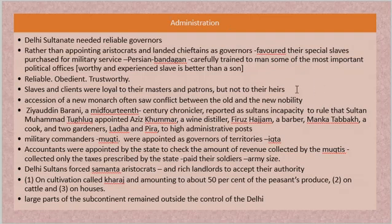These slaves were loyal to their masters, but not necessarily to their heirs. When a new monarch ascended the throne, they had their own slaves whom they appointed as governors and controllers of various offices. This created a clash between old and new nobility — the slaves appointed by the earlier sultan and those appointed by the newer sultan — which created friction.